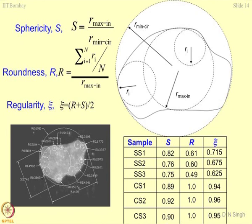Then comes roundness. You take a particle of sand and try to fit in as many circles as possible inside — like this is one circle, another circle, another circle and so on. Depending upon how many circles you can fit inside this area, you count them, find out their radius, divide by the number of particles taken, and then by the maximum inscribing radius of the material. This number is the roundness number, and regularity is nothing but the average of the two.